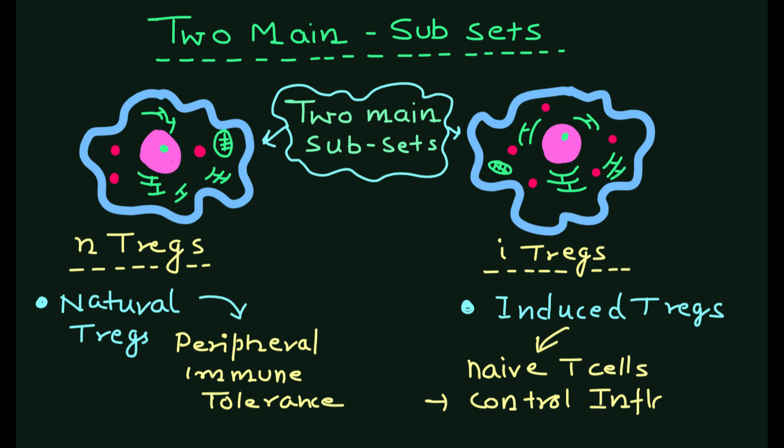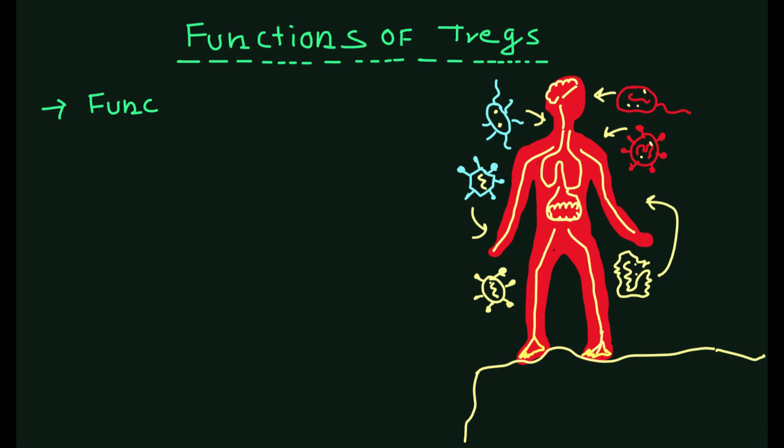Now let's discuss the functions of Tregs. As mentioned earlier, Tregs are important in maintaining immune tolerance and preventing autoimmune diseases.